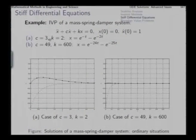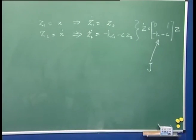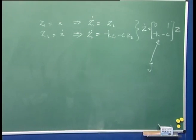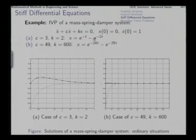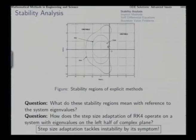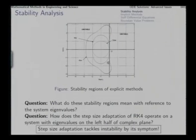With the values C=3 and k=2 substituted into this matrix, we find the eigenvalues to be minus 1 and minus 2, and accordingly the solution turns out as expected. Both eigenvalues are of reasonable magnitude and comparable order. With a sufficiently small but not too small step size h, the values h*lambda_1 and h*lambda_2 will fall within the RK4 stability boundary circle, so RK4 will be stable for this particular situation.